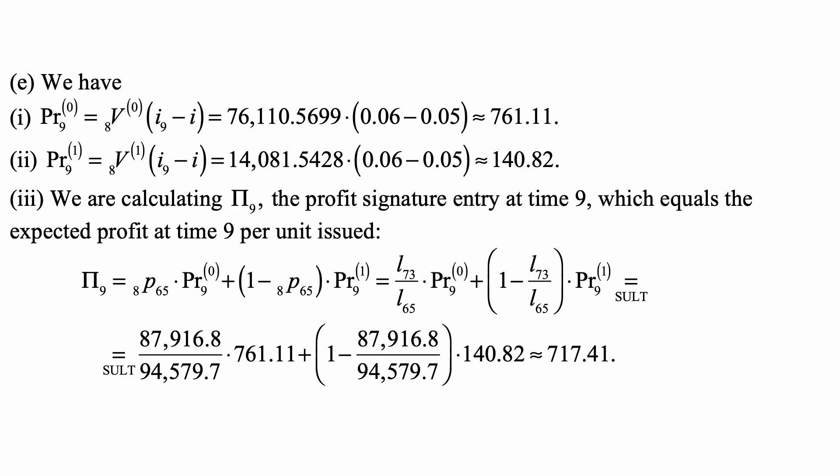It's simply the probability of survival, being alive from age 65 to age 73. We can write this as L73/L65, and those two are in the table. Then times profit in state 0 at time 9 plus (1 minus that probability of survival) times the profit at time 9 in state 1.